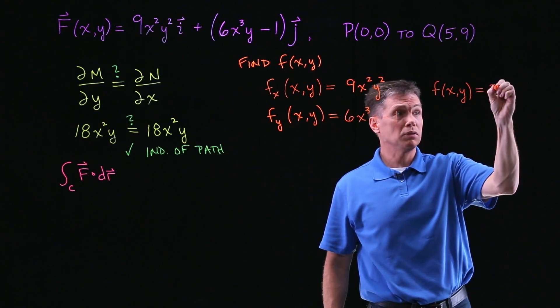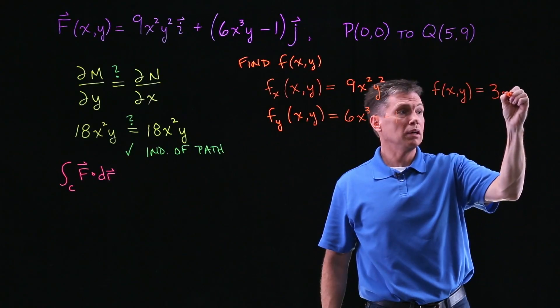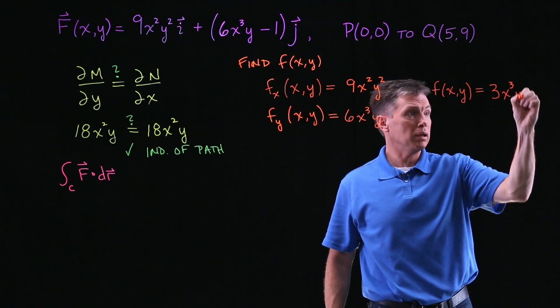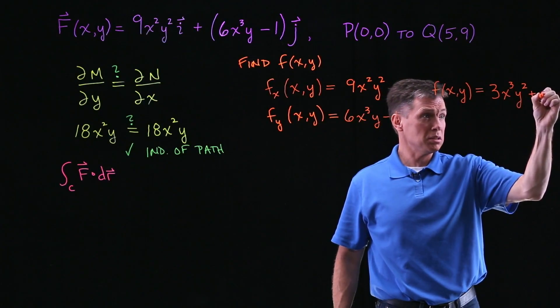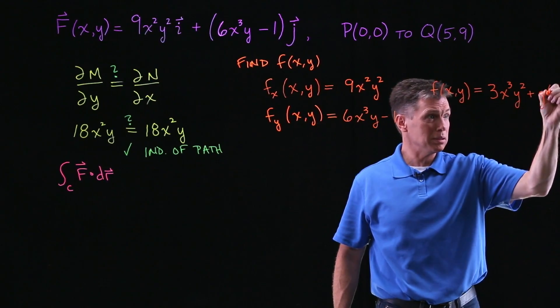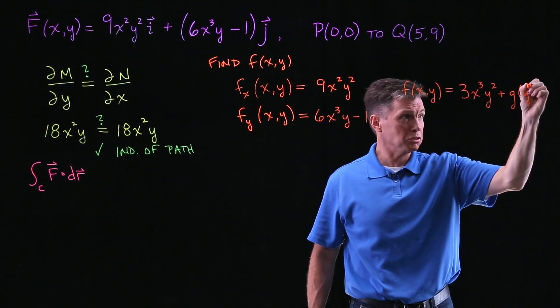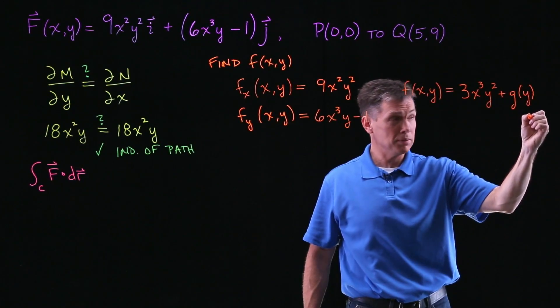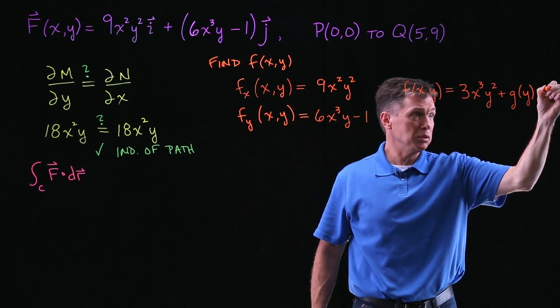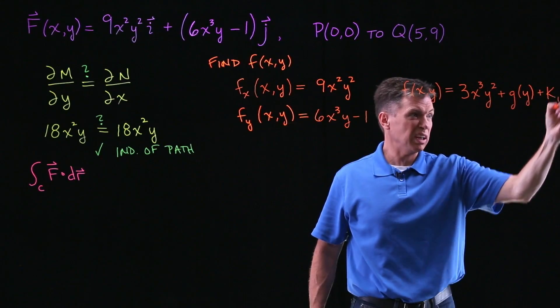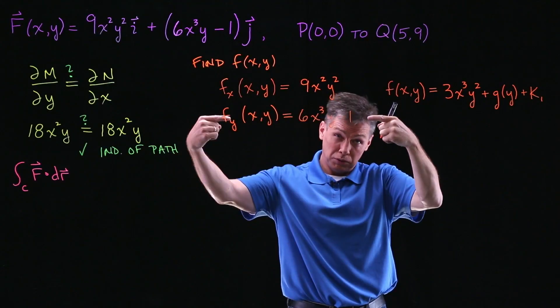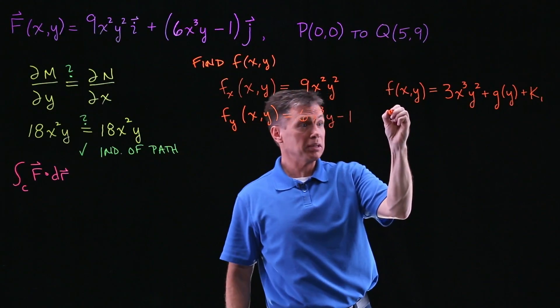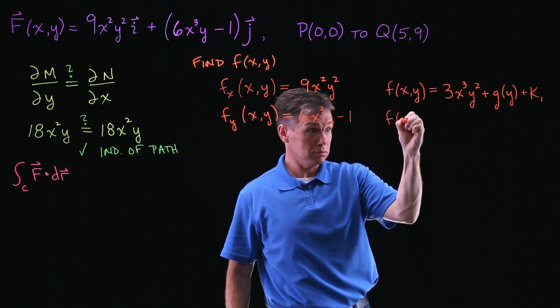So if I integrate this I'm bumping X up to the 3 power, dividing by 3, so I'm looking at 3X³ times that Y², and the uncertainty that I mentioned is you need to remember that there might also be some further expressions involving Y and there might also be some constant, usually a k of 1.